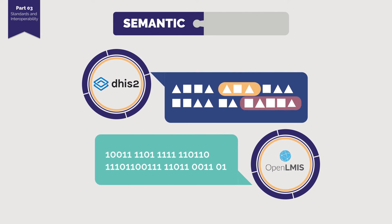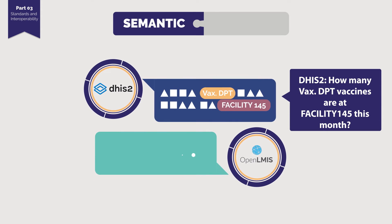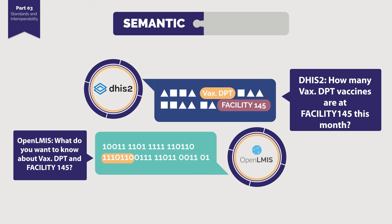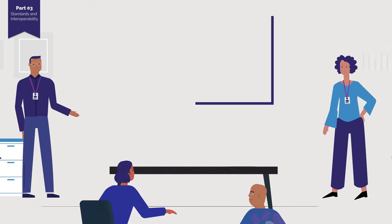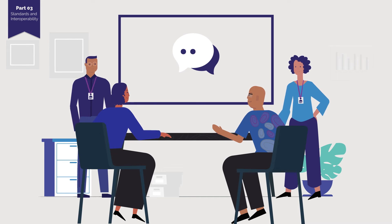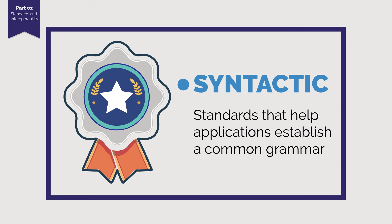When DHIS2 asks OpenLMIS how many vax.dpt vaccines are at Facility 145 this month, OpenLMIS responds to DHIS2 with a question: what do you want to know about vax.dpt and Facility 145? With semantic standards, even though both applications are now using the same words, OpenLMIS still doesn't understand what is being asked. OpenLMIS can understand the vocabulary of vax.dpt and Facility 145, but not how they relate. Knowing what the terms mean isn't enough.